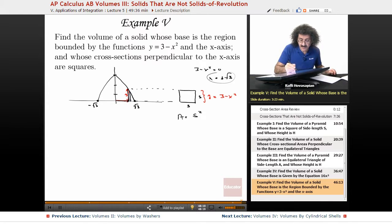The height of the square is 3 minus x squared. So, my area, which is equal to side squared, is equal to 3 minus x squared squared. Therefore, the area is equal to 9 minus 6x squared plus x to the fourth.